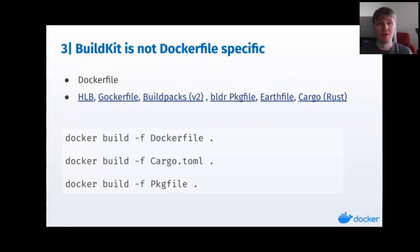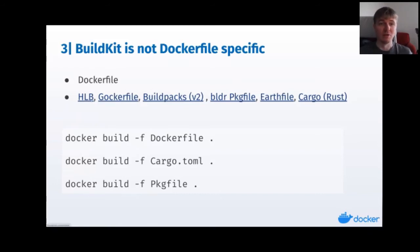We want to make sure that building Dockerfiles is very easy with BuildKit, so we have provided a Dockerfile frontend. But there are other frontends from the community as well — you can check those out later. We just put some of them here: HLB is like a more advanced version of Dockerfile, developed by some BuildKit maintainers from Netflix.